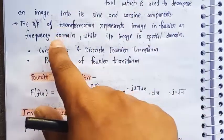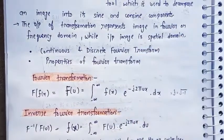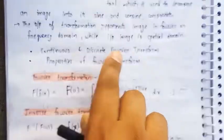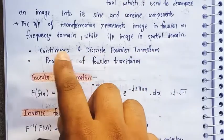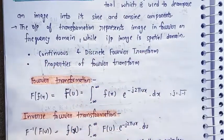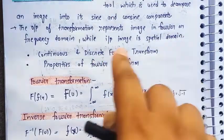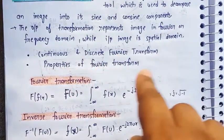So the input image will be converted into the frequency domain or Fourier, so we need the Fourier transformation. Now the Fourier transformation can be continuous or discrete. Continuous we will study in this video and discrete in the next video. Then after, we will discuss the properties of Fourier transformation.